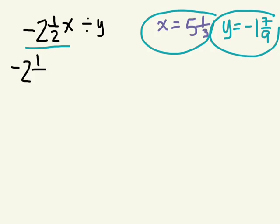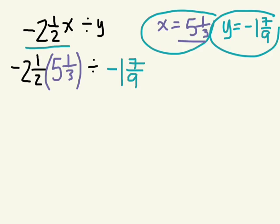So negative 2 and a half. I know x is 5 and 1 third, so I'm going to insert that where x is, and I know that it's multiplication. Divided by, what's y? Negative 1 and 7 ninths. So now we have, we have to use order of operations to evaluate this expression that involves the rational numbers. BEDMAS, what's the first thing we need to do here?